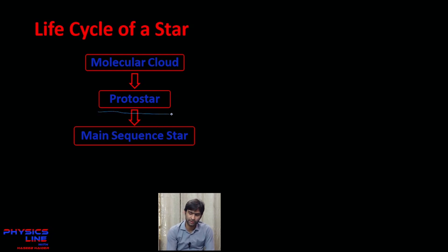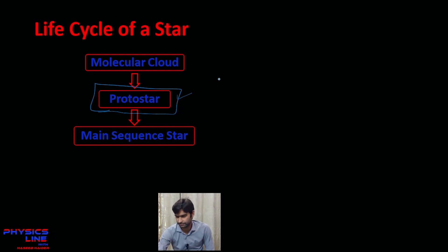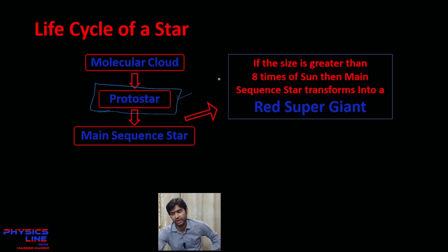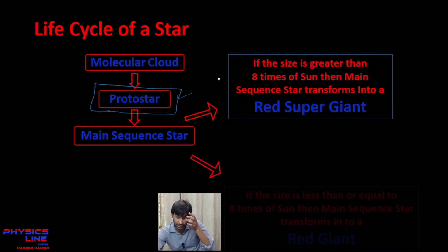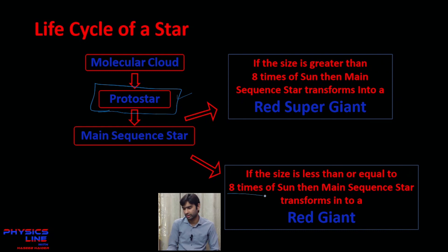What happens after the main sequence stage depends on the size of the protostar. If the star has a size greater than eight times that of the Sun, it will transform into a red supergiant. But if it was unable to accumulate that much mass, its size will be less than or equal to eight solar masses, and it will become a red giant.